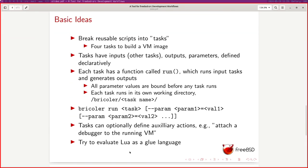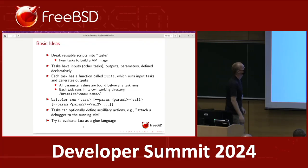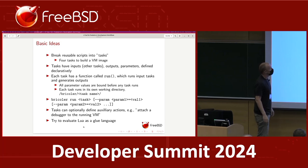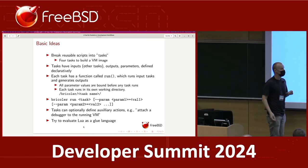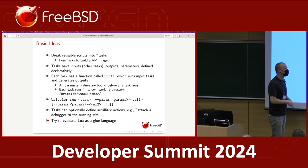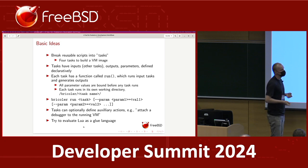So just some basic ideas before I launch into demos. The basic abstraction in Bricolet is a task — just some reusable piece of logic. Some parts of the task are defined declaratively: it has inputs, which are the outputs of other tasks. For instance, there's a task to clone a Git repository whose output is the path to that repository. There's a task to run FreeBSD make targets like build world and build kernel — the input is a FreeBSD Git repository and the output is an object directory.